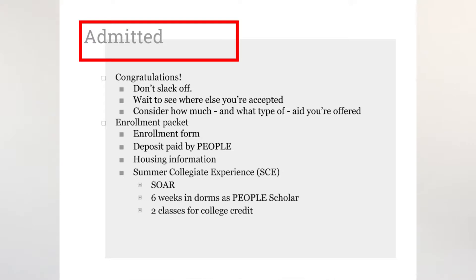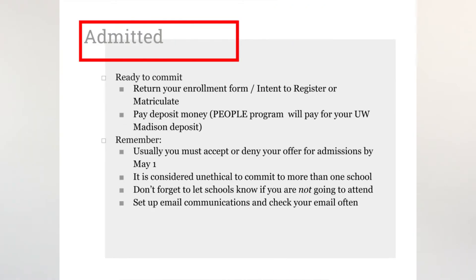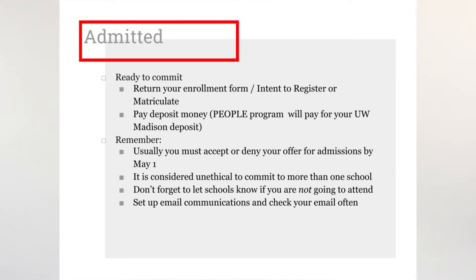Being accepted comes with an enrollment packet, so you will be receiving one. The enrollment packet will come with an enrollment form, information about the payment for your deposit, housing information, and the Summer Collegiate Experience — SCE. SCE we have talked about since the start of TTI, so you should all know that it's a six-week program where you will stay in the dorms for that time. If you're ready to commit after you have seen all of the other colleges' decisions and you're ready to commit to UW-Madison, then you can return the enrollment packet.